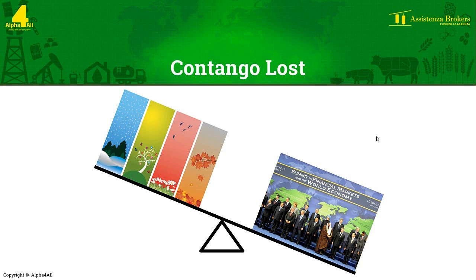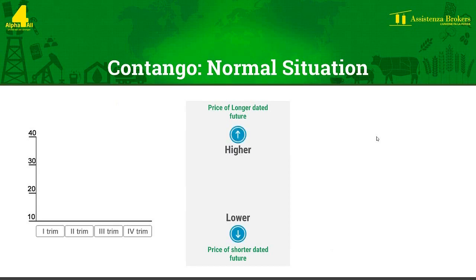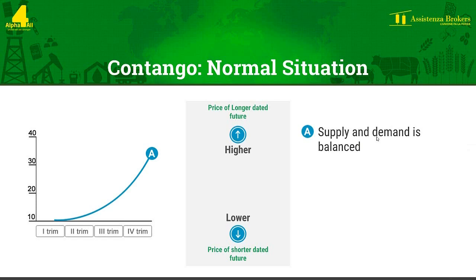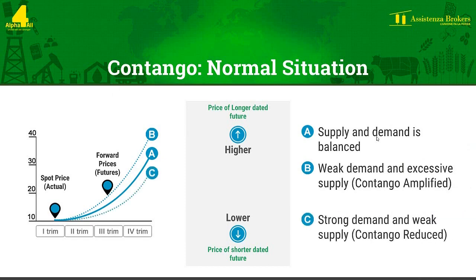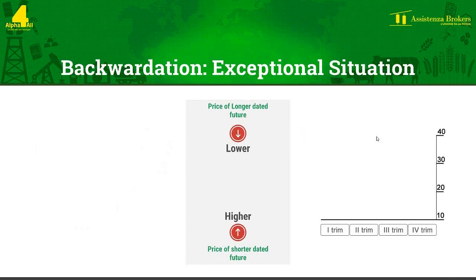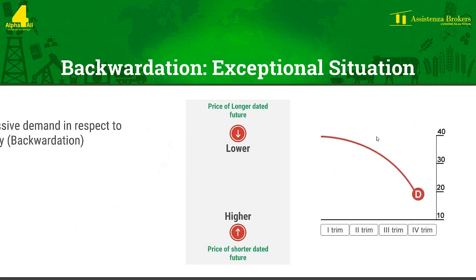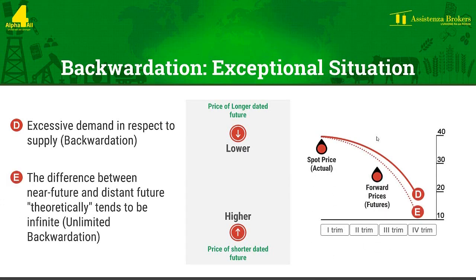The duration of this situation may differ depending on the severity of events that have caused it. As explained, the norm in the commodities market is contango, where the price of the shorter dated future is lower compared to that of the longer dated one. When demand and supply are balanced, markets are normal or in contango. When demand is weak and supply is excessive, markets tend to amplify the contango and the far dated futures price moves even higher compared to the near term ones. In the case of excess demand, the markets tend to reduce the contango and the price of the longer dated futures begins to move downwards closer to the nearer maturity, until eventually they reverse the curve thus sending it backwards. In the exceptional situation where we experience backwardation, we see that the price of the longer dated future moves lower than that of the near one, as excessive demand compared to supply affects the price. The backwardation curve is potentially unlimited — the difference between the near futures price and the far off future tends to theoretically be infinite.